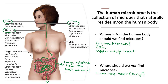Other places we will find microbes include any opening or orifice to the outside, and the tissues associated with those. These openings would include not just the mouth, but also the nose, the eyes, the ears, the anus, the vagina, and the urethra.